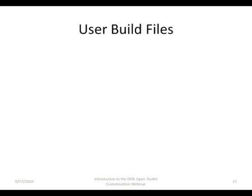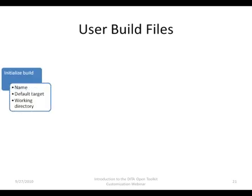To kick off a process in the Open Toolkit, you would generally need to write the build file. We learned that the Open Toolkit is a pipeline of different processing steps, and scripts are used to chain the steps together. In a user build file, you initialize the build by setting the name of the build project, default target to build, and working directory.